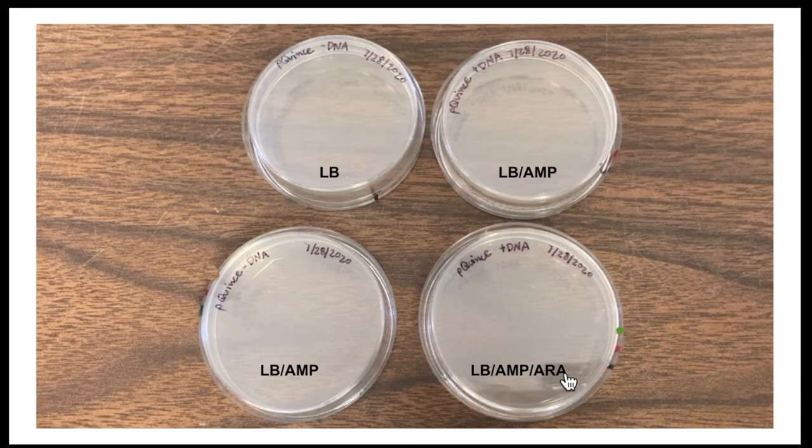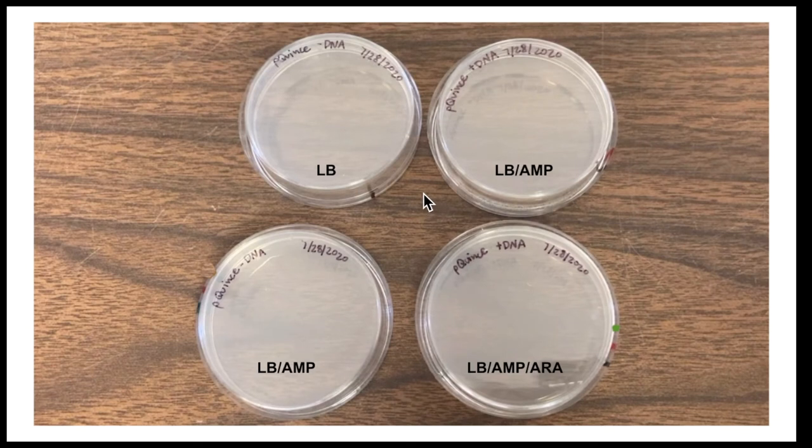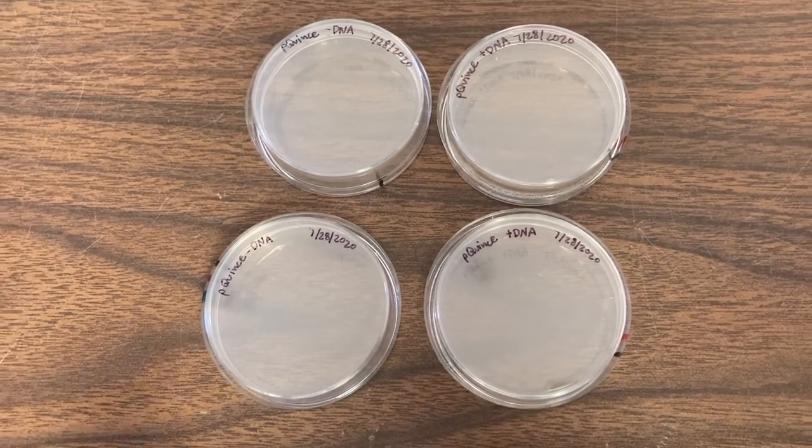And this will be important when you're making sense of your results from this transformation. One final thing I need to point out before we go to the video on plating. You'll notice that this plate is labeled with minus DNA. That means it will get the bacteria that did not receive the plasmid. This plate also will receive the same bacteria, the bacteria that did not get the plasmid DNA. These two plates here are labeled with plus DNA. Here we're going to plate the bacteria that did receive the plasmid. As well as in this plate here, we'll also get the bacteria that did receive the plasmid. That's really important to keep in mind when you go to your results later. Okay, so let's get to the plating.